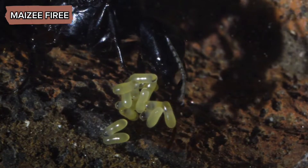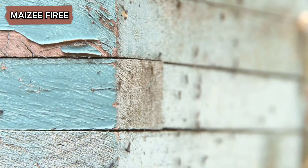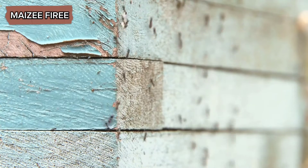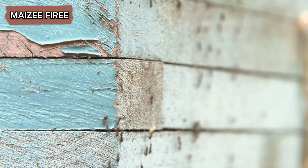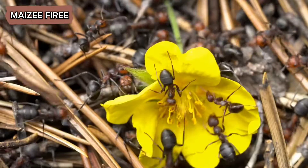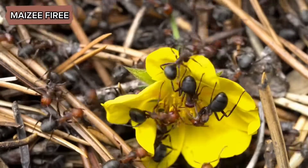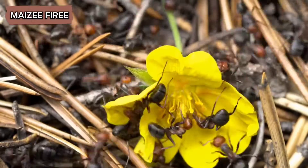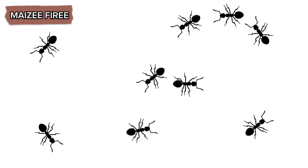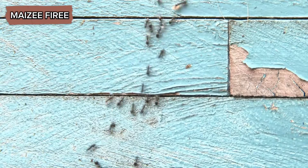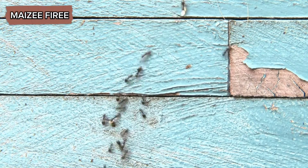The queen lays eggs by contracting her abdominal muscles to push the eggs through the ovipositor. The ovipositor is a versatile organ adapted for precise placement of eggs, ensuring they are deposited in optimal locations within the nest. The queen meticulously arranges her eggs, often in clusters or neat rows, to facilitate care and development. The eggs are initially small, oval-shaped, and have a soft, delicate shell called the chorion. The queen may also secrete a sticky substance that helps anchor the eggs in place and may offer some protection against desiccation and pathogens.